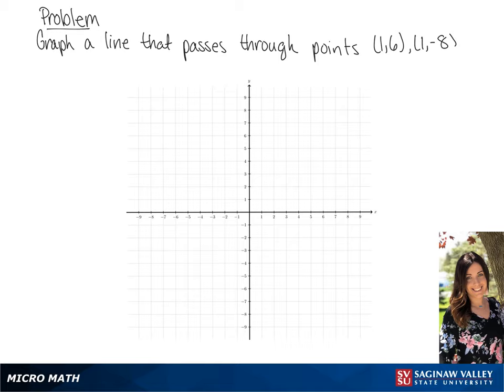First, we're going to graph (1, 6), so we're going to go right 1 and up 6. Now we're going to graph (1, -8), so we go right to 1 and down to 8. Then we're going to draw a line that passes through both of these points.